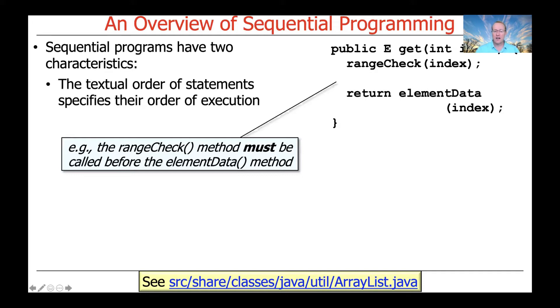Here's a very simple example. If you take a look at the Java class library source code, you'll see that there's a class called ArrayList, which is an implementation of the list interface. There's a method called get, and you pass in an int, which is the index you want to get. What it does is it first checks to see if the index is in range, and assuming that it is, because if it isn't it'll throw an exception, then it goes ahead and returns the element that is at the indexed location. In a sequential program, the range check method must be called before the element data method. That seems sort of obvious at one level, but I'll show you in a second how in a concurrent program, it could be somewhat different.